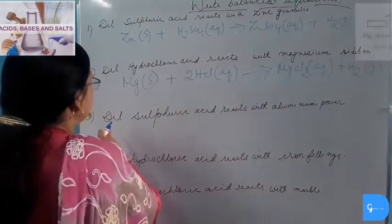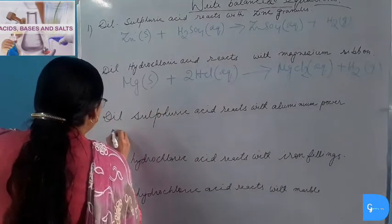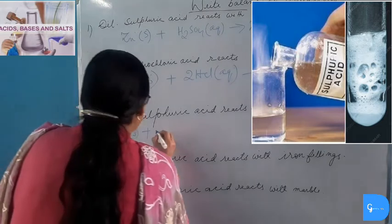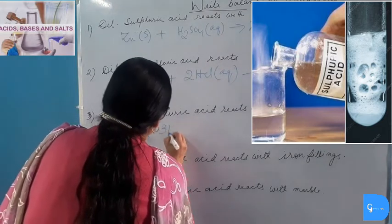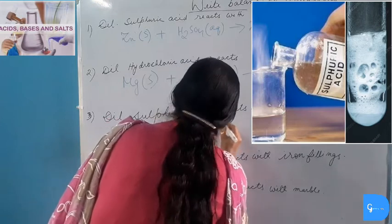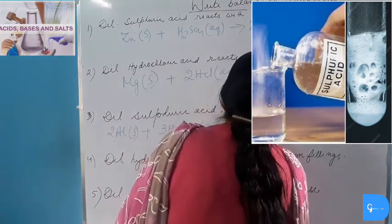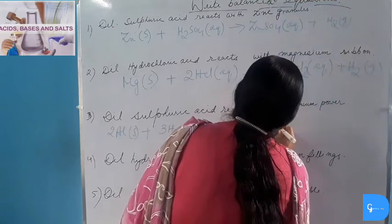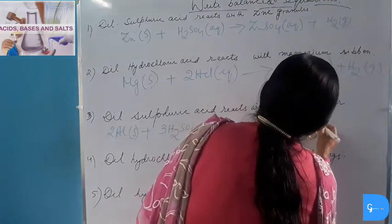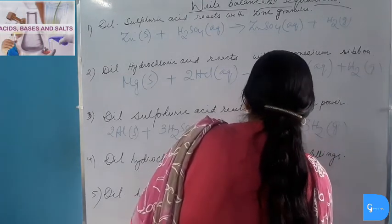Dilute Sulphuric Acid reacts with Aluminium powder (solid): 2Al(s) + 3H₂SO₄(aq) → Al₂(SO₄)₃ (aqueous) plus 3H₂ gas.